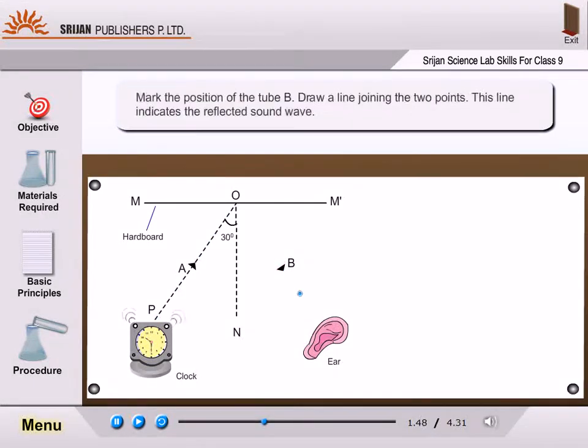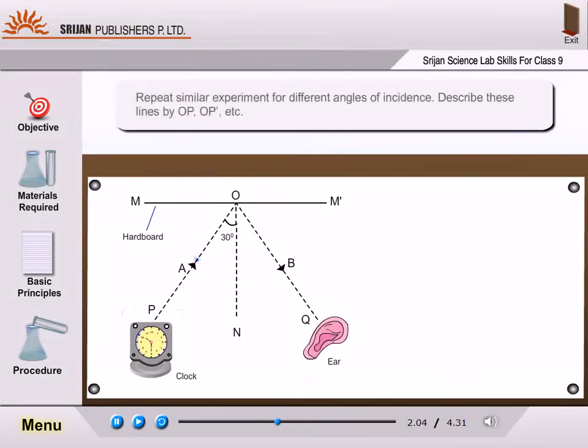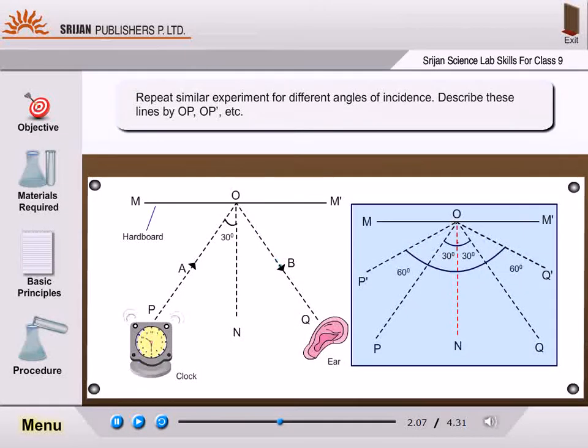Mark the position of tube B. Draw a line joining the two points. This line indicates the reflected sound waves. Repeat similar experiment for different angles of incidence.